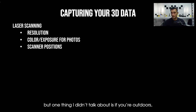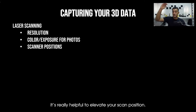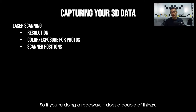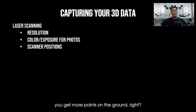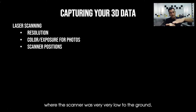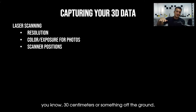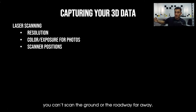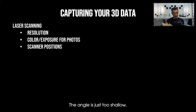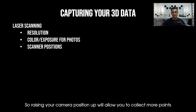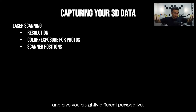I already talked about scanner positions, but one thing I didn't mention is that if you're outdoors it's really helpful to elevate your scan position. If you're doing a roadway, lifting the scan position up gets you more points on the ground. In an extreme situation where the scanner was very low to the ground — say 30 centimeters — you can't scan the ground or roadway far away because there's no laser return; the angle is just too shallow. Raising your camera position allows you to collect more points and gives a slightly different perspective.